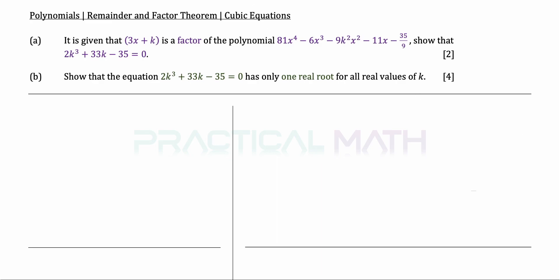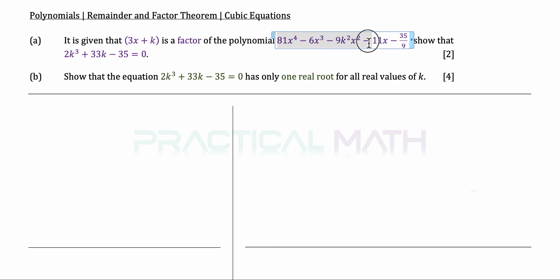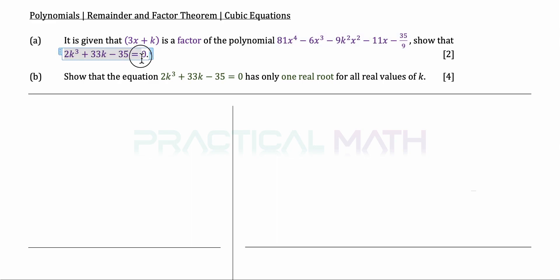Hi, in this video we shall be discussing remainder and factor theorem as well as cubic equations, which is part of this topic on algebraic polynomials. The question states that 3x plus k is a factor of the polynomial 81x to the power of 4 minus 6x cubed minus 9k squared x squared minus 11x minus 35 over 9. We are to show that this expression reduces to 2k cubed plus 33k minus 35 equals 0.